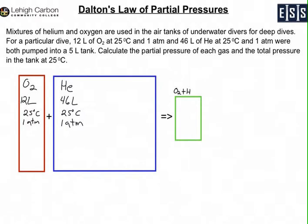You're taking those two gases and putting them into a combined tank. This tank will have oxygen and helium. It's 5 liters in volume at 25°C, so the temperature has been constant. They're asking for the partial pressure of each gas in this tank and also the total pressure.